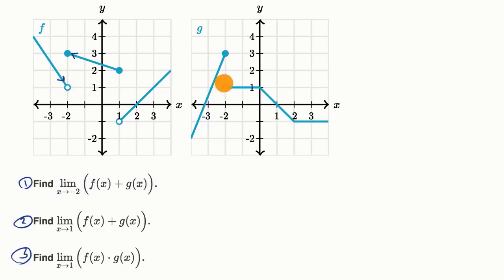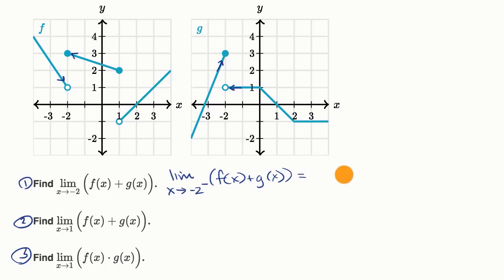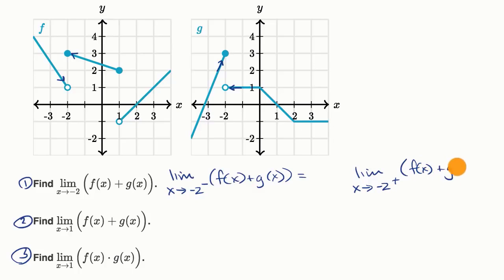So the limit as x approaches negative two of f of x doesn't exist. The same is true of g of x — approaching from the left looks like three, and from the right looks like one. But it turns out this limit can still exist, as long as the limit as x approaches negative two from the left of the sum f of x plus g of x exists and equals the limit from the right of f of x plus g of x.